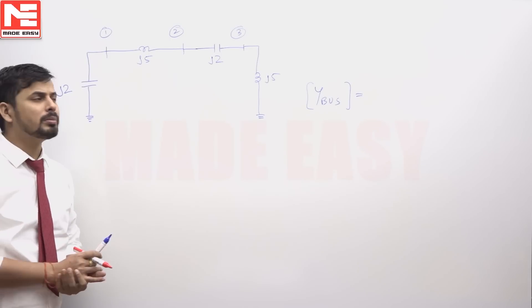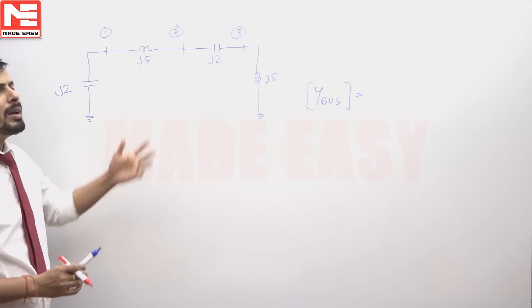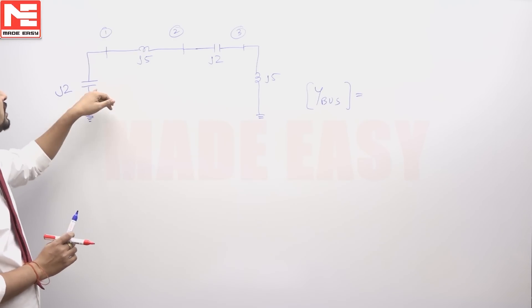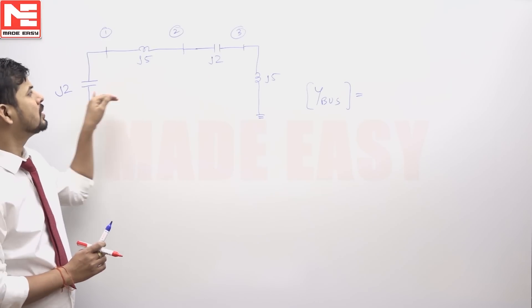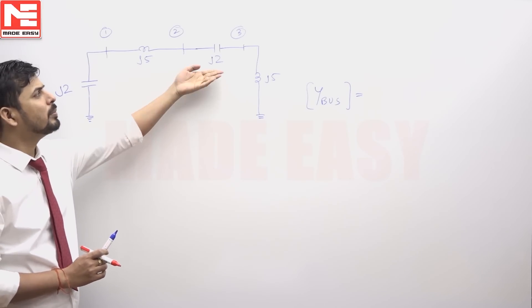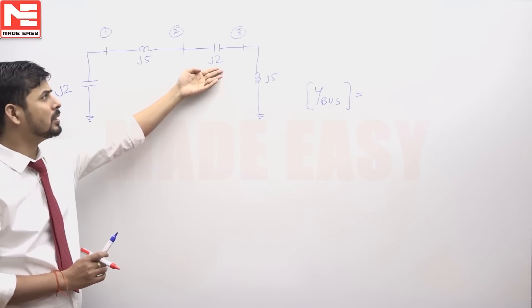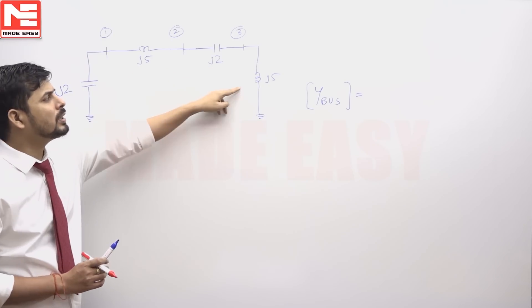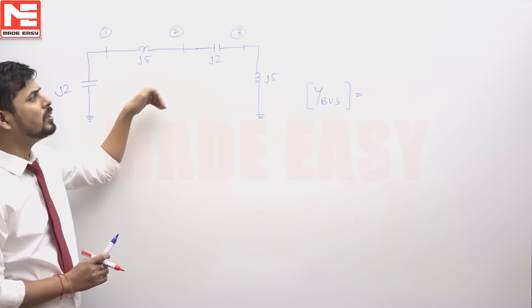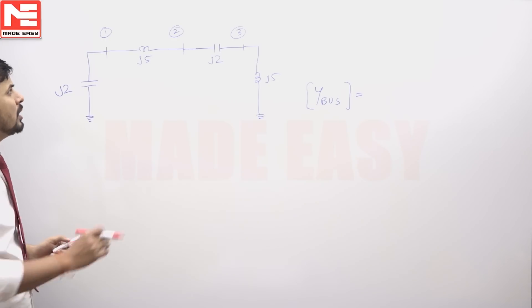For this given 3-bus system we have to form the Y-bus matrix. For the Y-bus matrix the required values are admittances. For these two capacitors the admittances are given. Why? Because positive values correspond to the admittance of the capacitor. But for these two inductors the positive values are reactance values, so we have to invert them to find the admittance values.